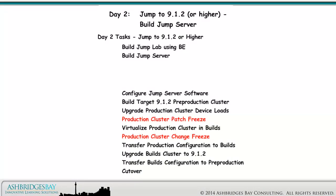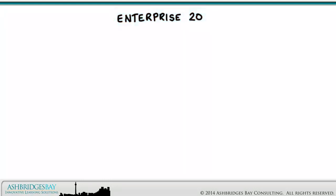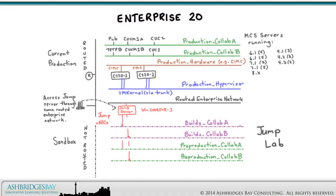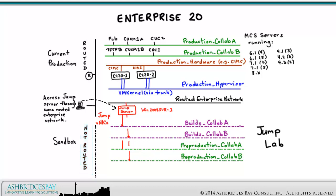The individual tasks are Deploy Base Server in Jump Lab and Configure Jump Server Networking. Enterprise 20 is the model Enterprise used in the ABAYLAB environment to illustrate BE6000 deployment, configuration, and ongoing administration. Our Jump environment has VLANs that are routed and VLANs that are not. The VLANs that are routed are current production VLANs, and the VLANs that are not routed represent our sandbox. See our Jump Lab VLANs drawing for a detailed discussion of these VLANs.